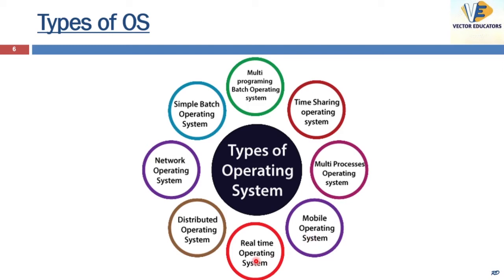Now we come to the real-time OS. In this case, the time interval required to process and respond to input is very small. This system is used in control systems that require real-time response — examples include scientific experiments, industrial control systems, weapon systems, robots, and virtual reality. These have dedicated applications depending on time-critical functioning.